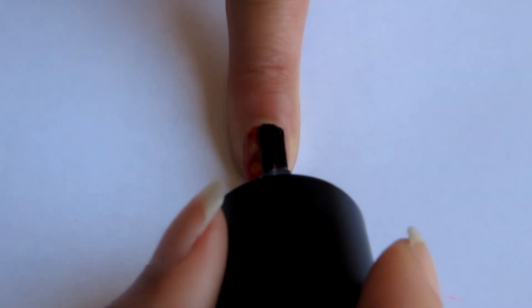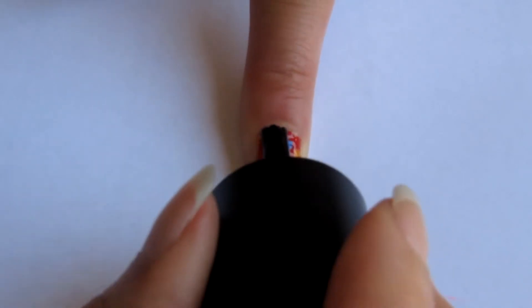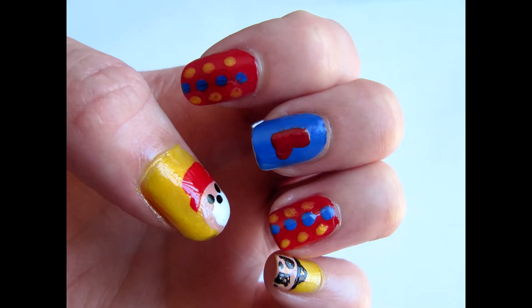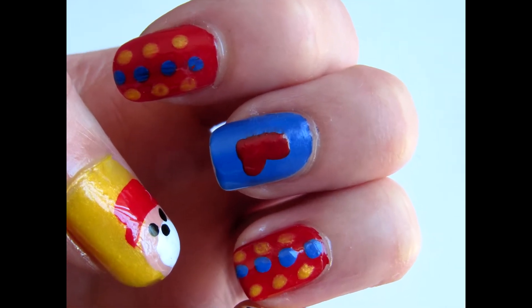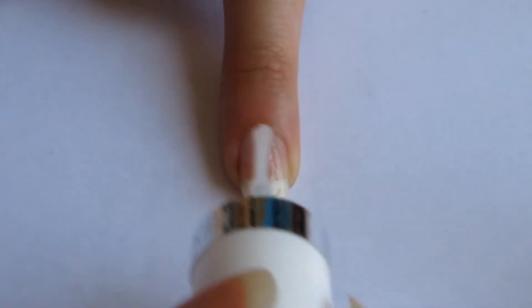Then make three dots on either side of the blue ones using the yellow polish from earlier. Finish off with a top coat and you're done.